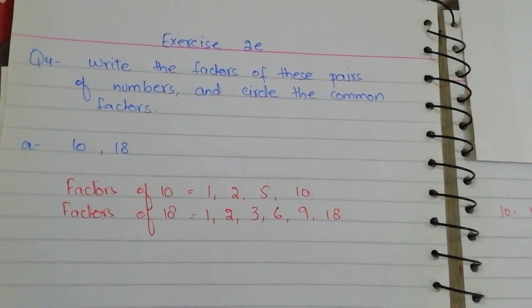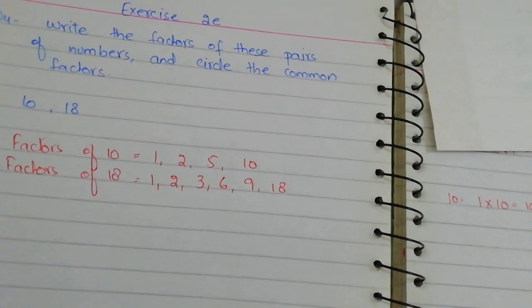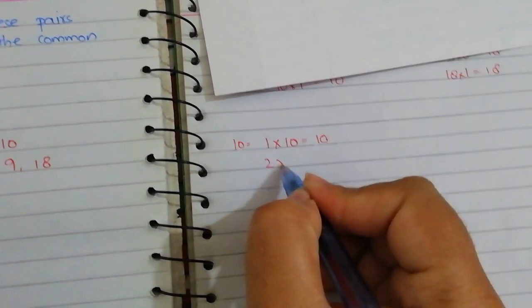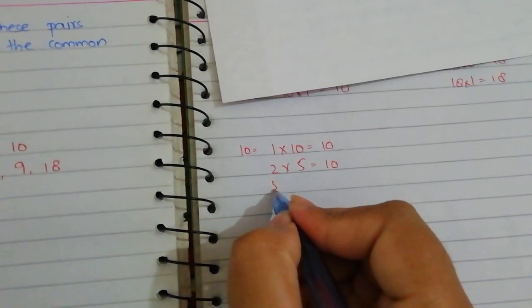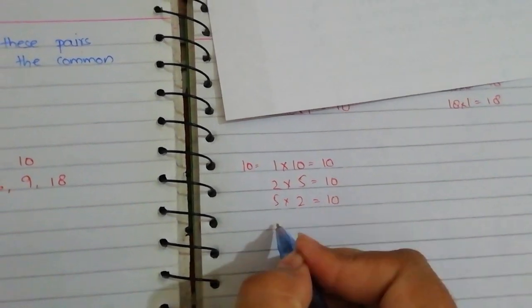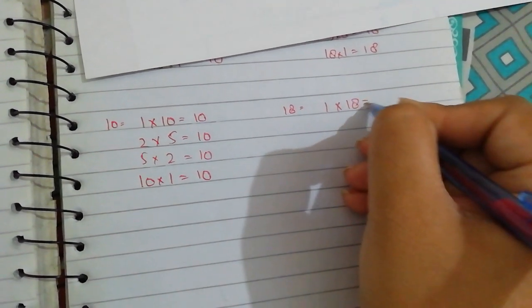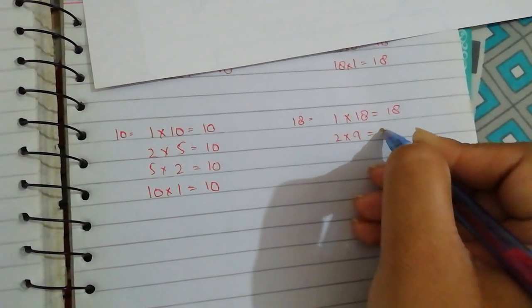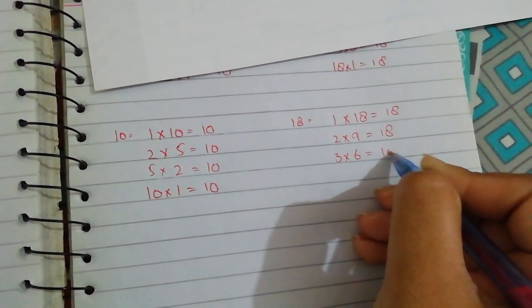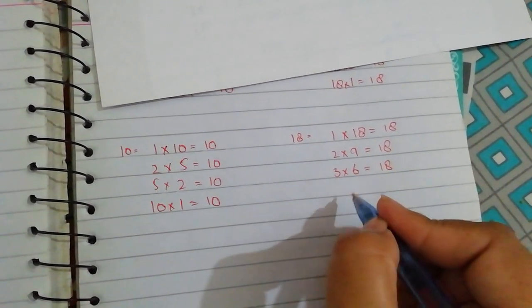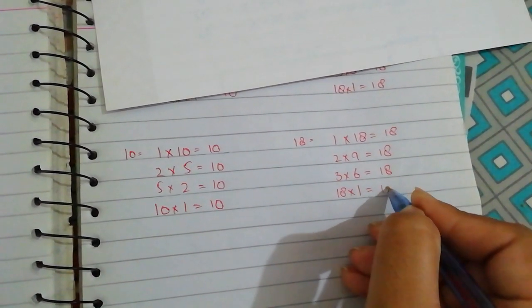The factors of 10 and 18. First we check 10 using the multiplication table: 1 multiplied by 10 is equal to 10, 2 multiplied by 5 is equal to 10, 5 multiplied by 2 is equal to 10, and 10 multiplied by 1 is equal to 10. For 18: 1 multiplied by 18 is equal to 18.